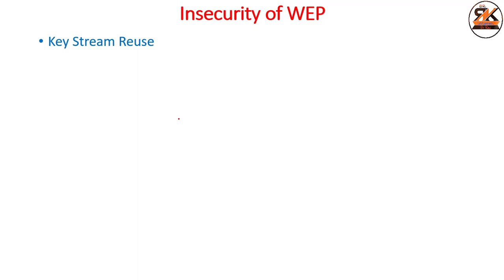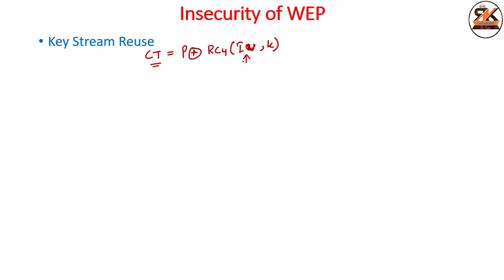The first insecurity is key stream reuse. The key stream used to encrypt the plain text is generated by the RC4 algorithm from the IV and key. The ciphertext equals the plain text XORed with RC4(IV, K). Since K is fixed, when the same IVs collide, the same key stream is generated and reused.